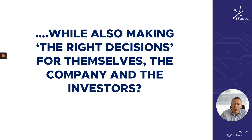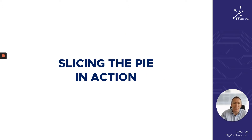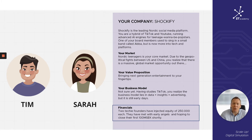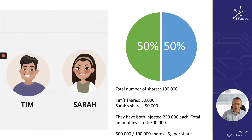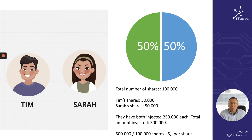How can they raise funding while also making the right decisions for themselves, the company, and the investors? This is what we call slicing the pie in action. Tim and Sarah — two founders — have both injected 250,000 each, meaning they own 50/50 of the company. Based on the available information, the total number of shares in the company is 100,000: Tim owns 50,000 and Sarah owns 50,000. They both injected 250,000 each, so total amount invested is 500,000. Dividing 500,000 by 100,000 shares gives us a price of five per share.